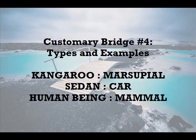Customary Bridge number four: Types and examples. Some term describes an example or type of what the other term describes. For example: kangaroo is to marsupial; sedan is to car; human being is to mammal.